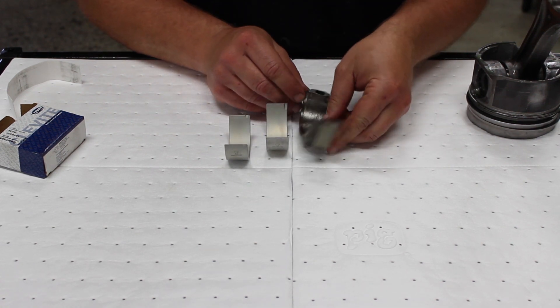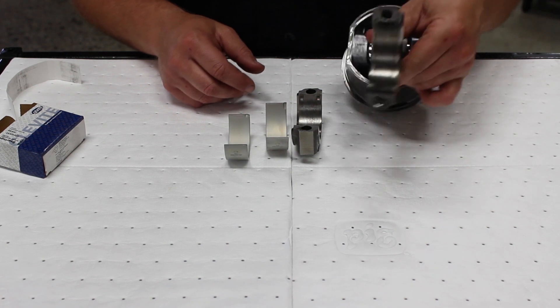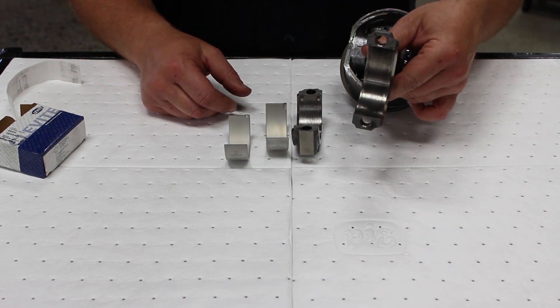When you're putting the bearings on the cap and the connecting rod, there is a right and wrong way for this.